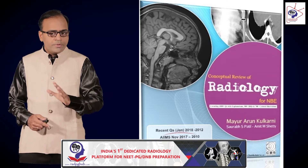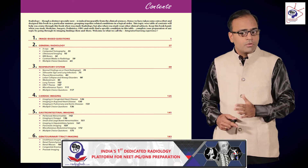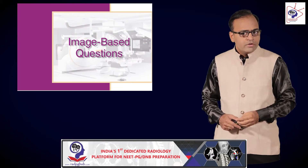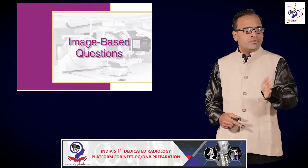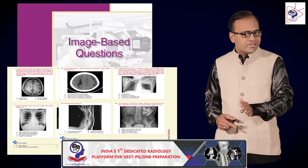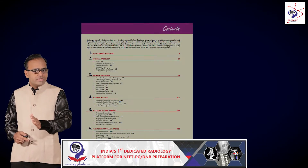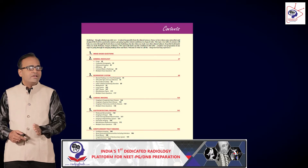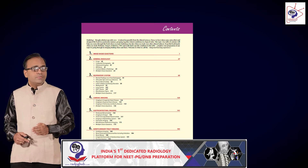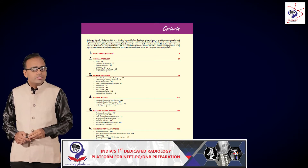Let me give you a small example. When you open Conceptual Review of Radiology and come to the table of contents, you will find a very systematically arranged and logically sequenced list of topics. The book starts with a chapter of image-based questions introducing around 100 images from different modalities — questions similar to those recently asked in various entrance exams. Next you go to historicals in radiology, then to basics of radiology which is general radiology, and from that foundation you jump into systemic radiology.